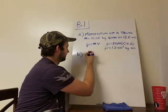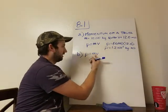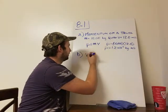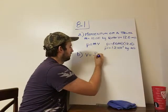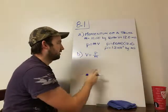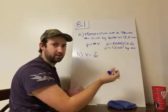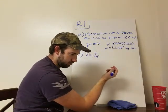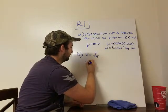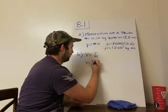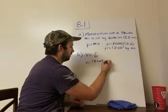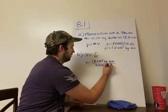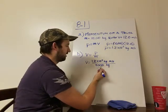So for part B, we'll use our same equation, but we need to rearrange it to solve for the velocity. When we do that, we end up with the velocity equals the momentum over the mass. We already know the momentum of the truck that we're trying to be equal to, and we know the mass of this SUV, which is 2,000 kilograms. So when we plug that in, we get the velocity equals 1.2 times 10 to the fifth kilogram meters per second over 2,000 kilograms. Our kilograms will cancel.